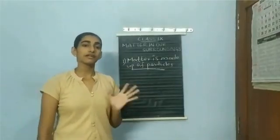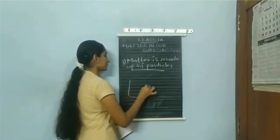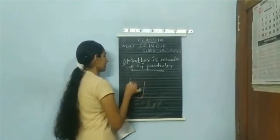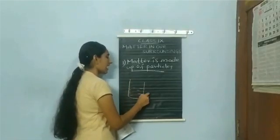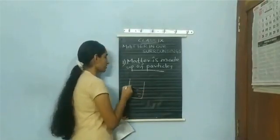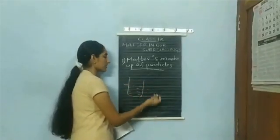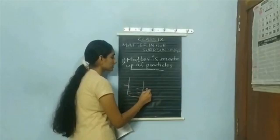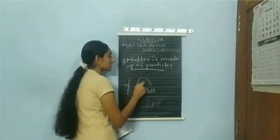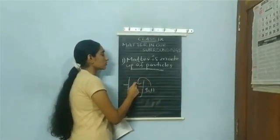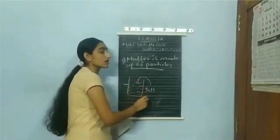We will prove this by doing an experiment. We will take a beaker and fill it with half of water. Mark the water level, then add some salt and stir it well. After some time, or after stirring it well, you will find that the salt disappears.